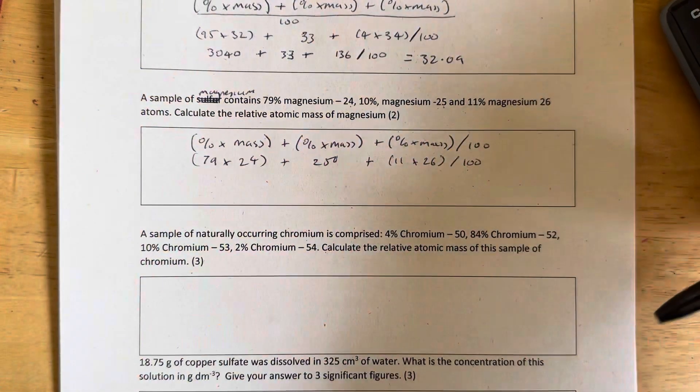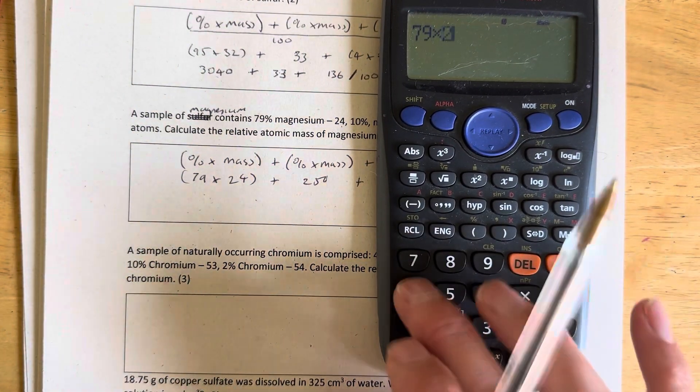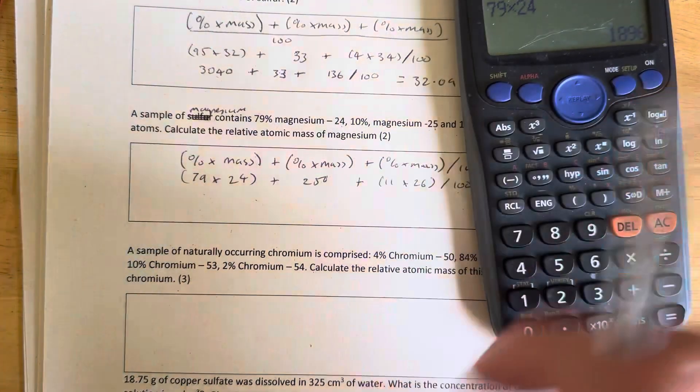Let's work out the brackets. 79 times 24. Let's do that first. 79 times 24 equals 1896. Let's write this down.